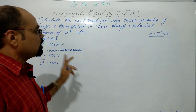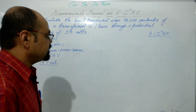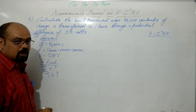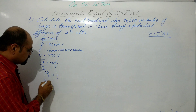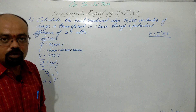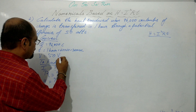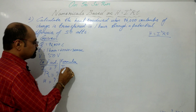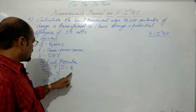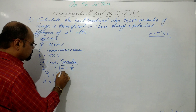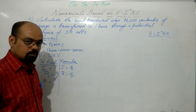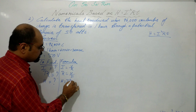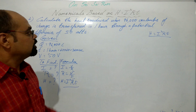Since H = I²RT and neither I nor R are directly given, we need to find current I and resistance R first. Formulas: I = Q/T (since Q and T are given), R = V/I, and H = I²RT. These are the three formulas we will use to solve this problem.